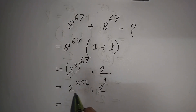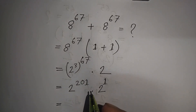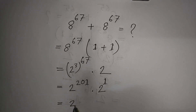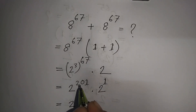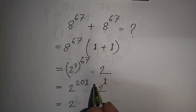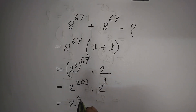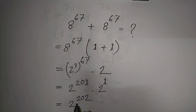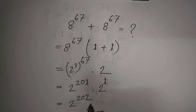So we have 2^201 · 2^1 = 2^(201+1) = 2^202. Therefore, 2^202 is the correct final answer.